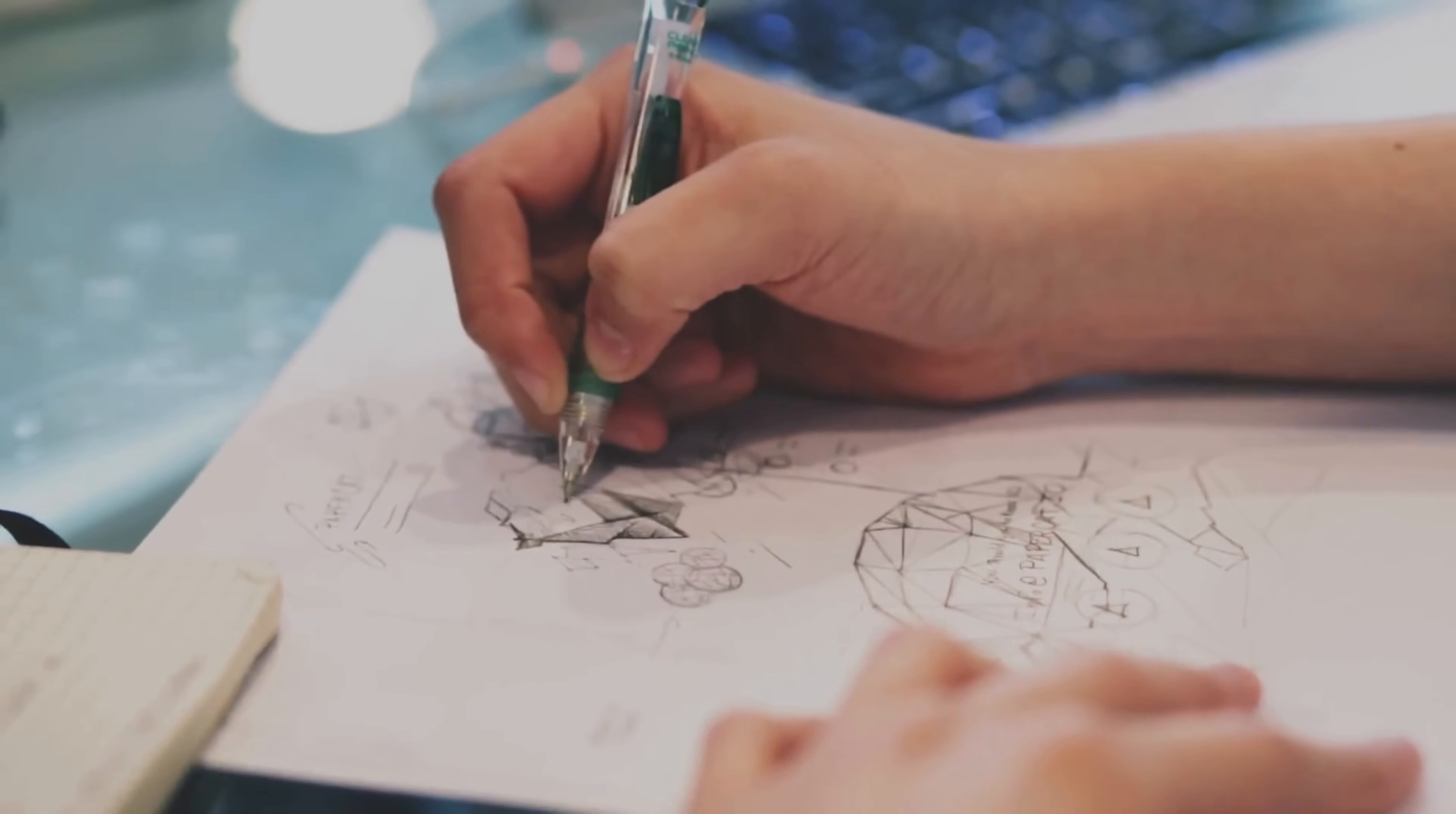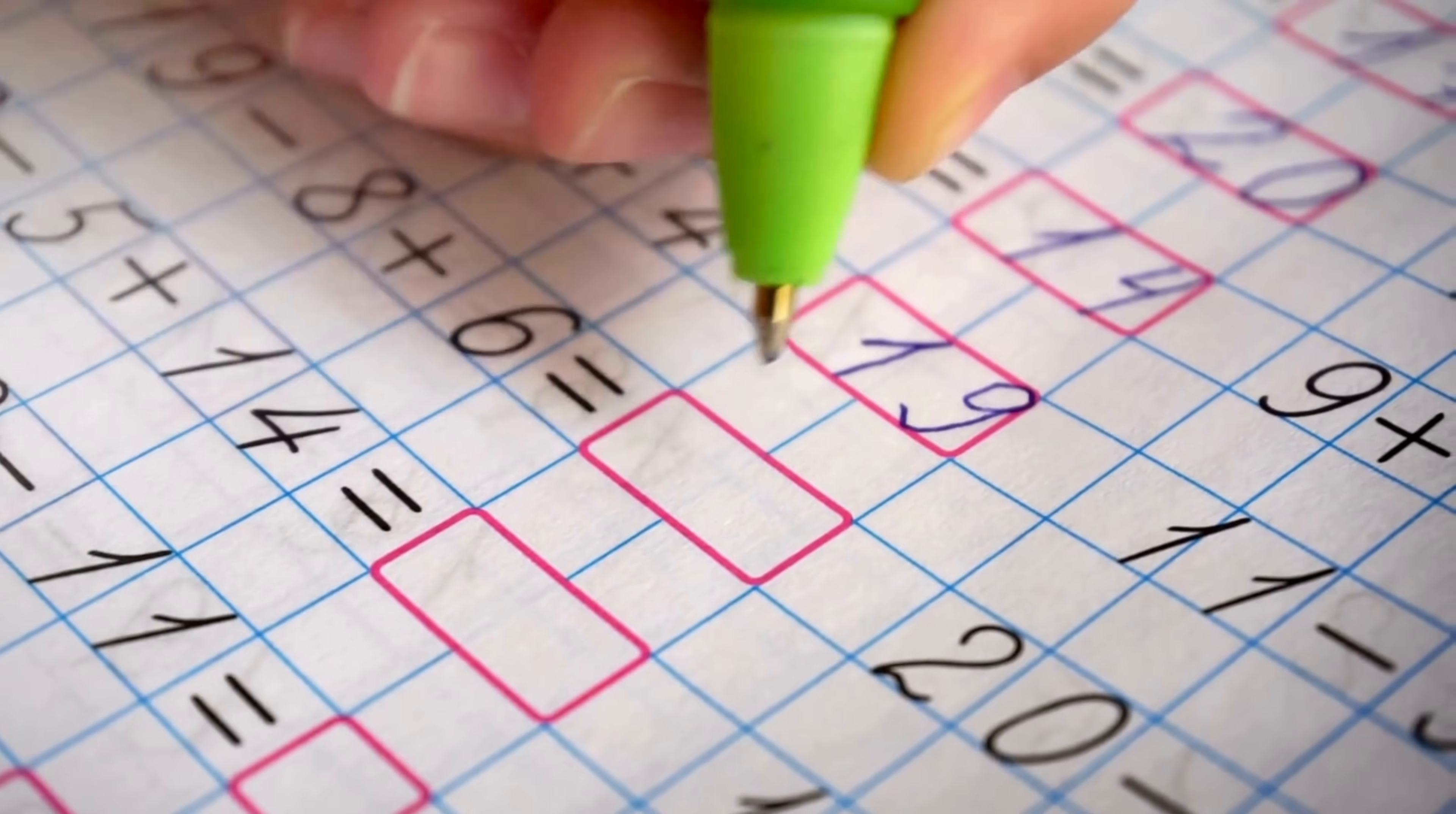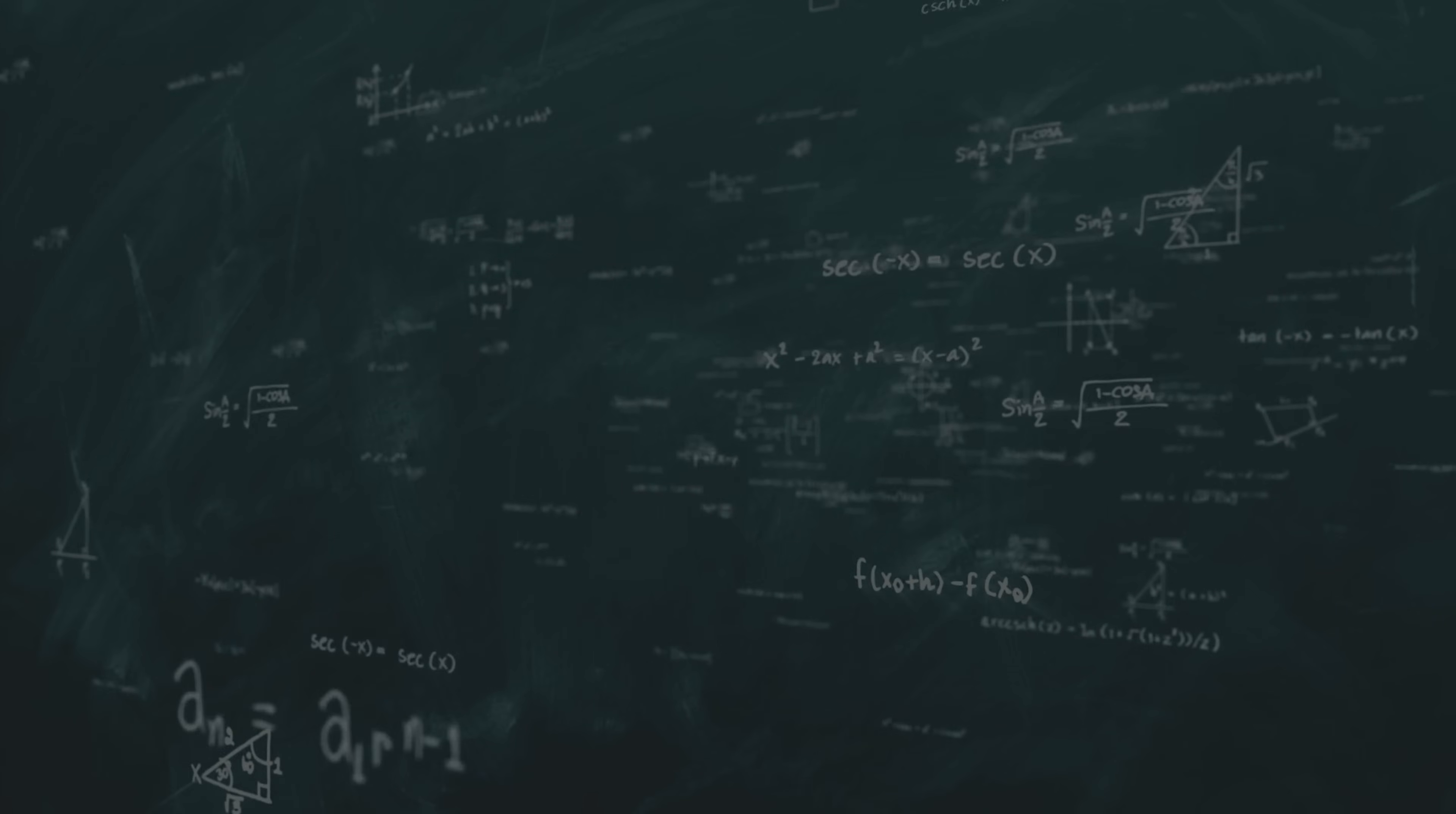It was in middle school that Maryam's path shifted distinctly toward mathematics. She discovered the captivating allure of solving complex mathematical puzzles. She often recounted an inspiring moment when her older brother explained a famous mathematical problem, adding numbers from 1 to 100, famously solved by the mathematician Gauss, as the first instance where mathematics genuinely intrigued her.